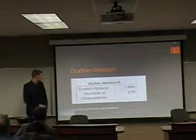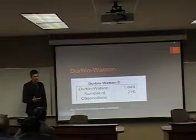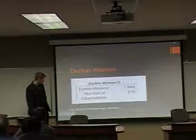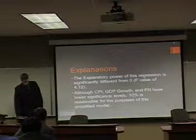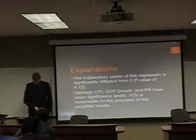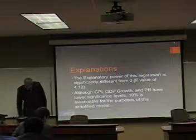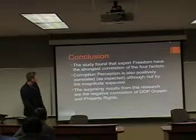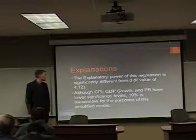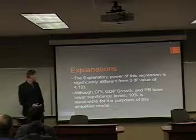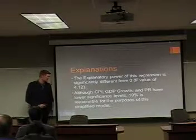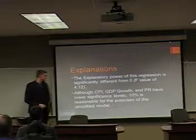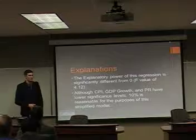I looked at the Durbin-Watson statistic to test for any serial correlation just from repetitive measurement, and I just wanted to make sure there wasn't a problem there. A score of 1.8 shows that it's not very serially correlated. The explanatory power of the regression is strongly different from zero with an F-statistic of 4.2, basically giving credit to the model. Although CPI, GDP, and property rights have less significant levels, I believe for such a general model that 10% is reasonable to estimate from.